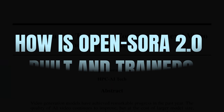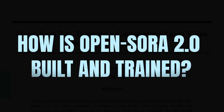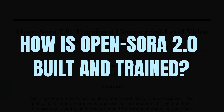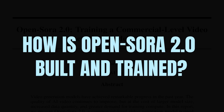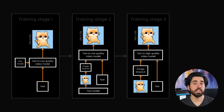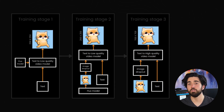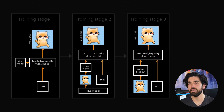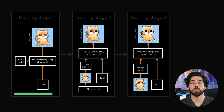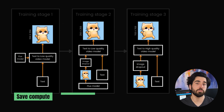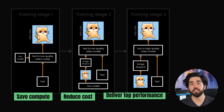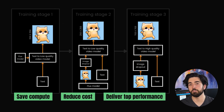Now let's dive into how Open Sora 2.0 is built and trained. The training pipeline is not just divided into two stages, but into three distinct stages, each carefully optimized to save compute, reduce costs, and deliver state-of-the-art performance.